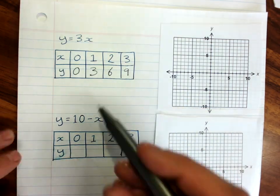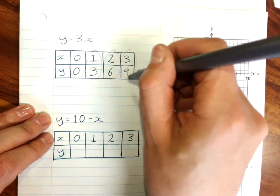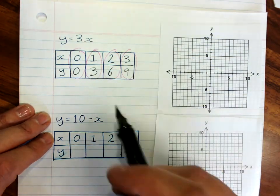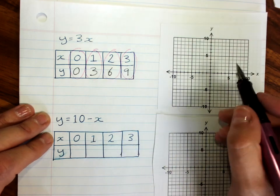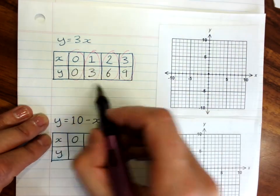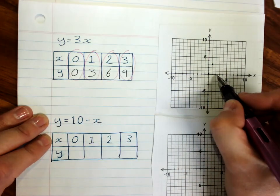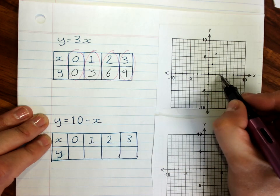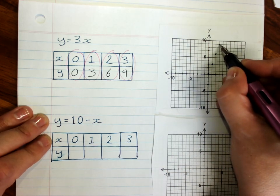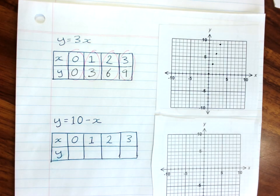And from a table of values, what I get is a set of coordinates, x and y, which I can plot on a number plane. Plot the point 0, 0. Point 1, 3, 2, 6, and 3, 9. And you'll see that they all turn up in a straight line.